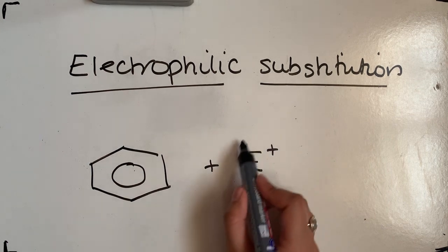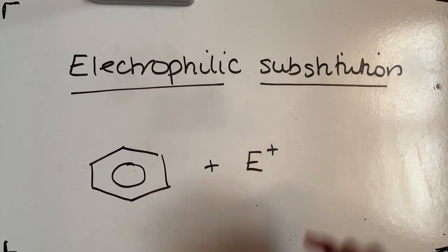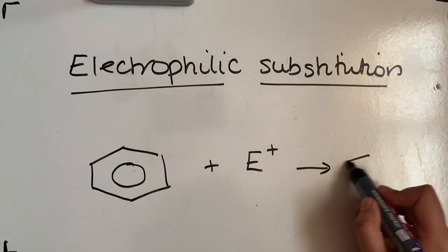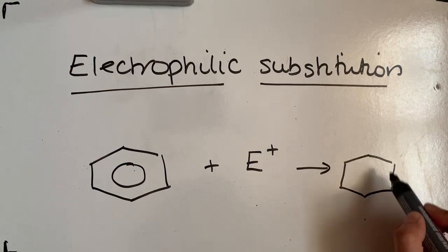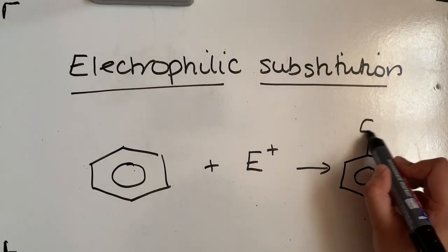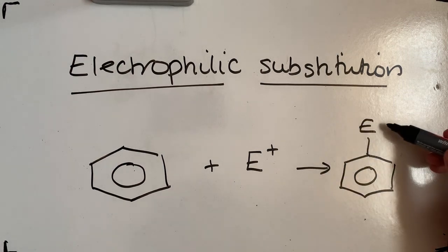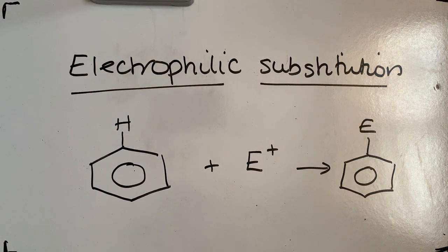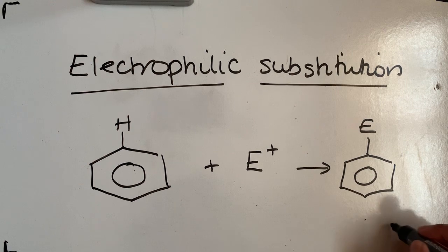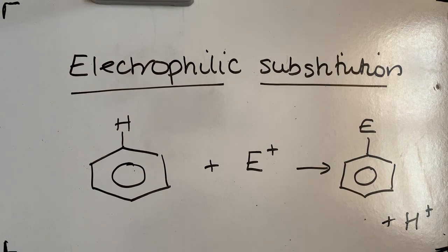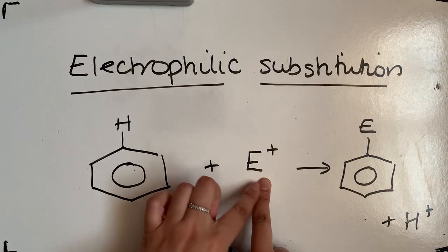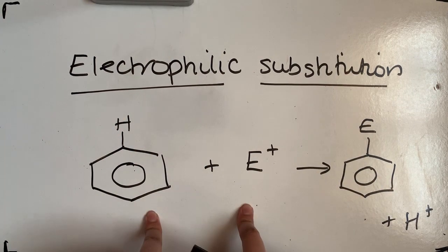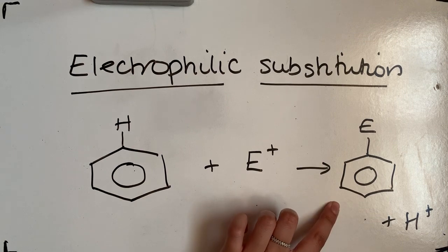The electrophile, represented as E⁺, has a positive charge. When we do our substitution reaction, it forms a benzene ring where the electrophile has replaced or substituted a hydrogen on that ring, giving us H⁺ as a product. So two reactants, two products.